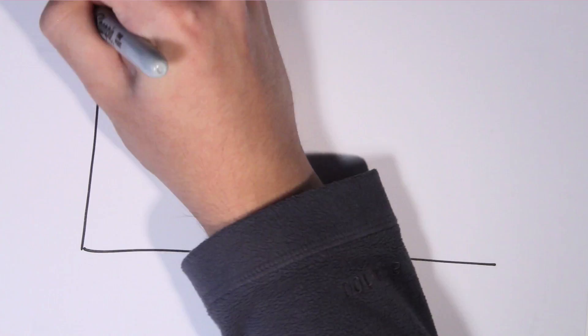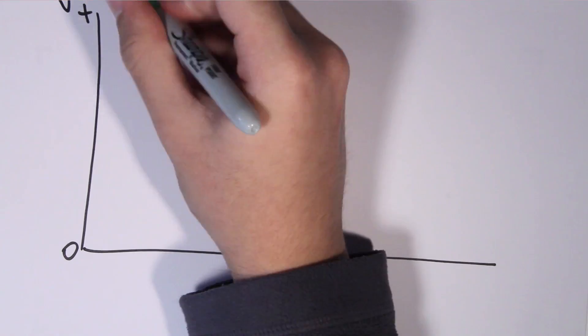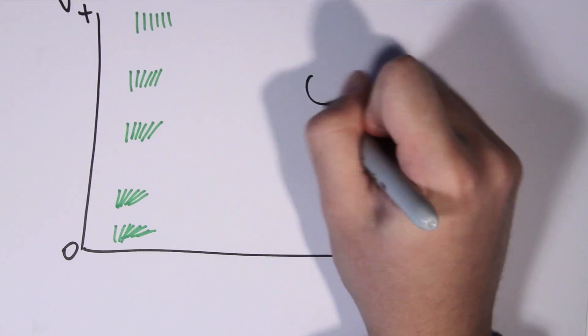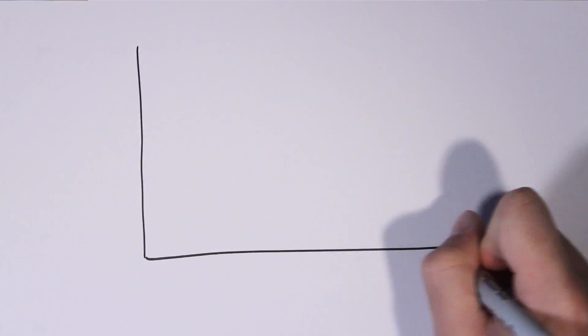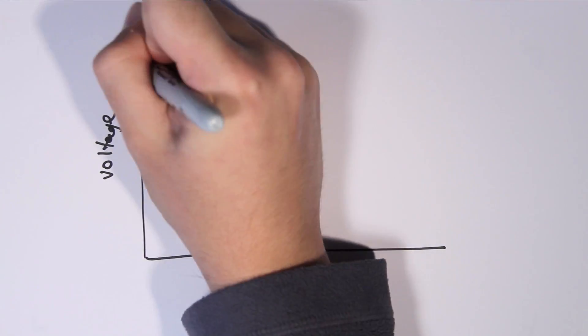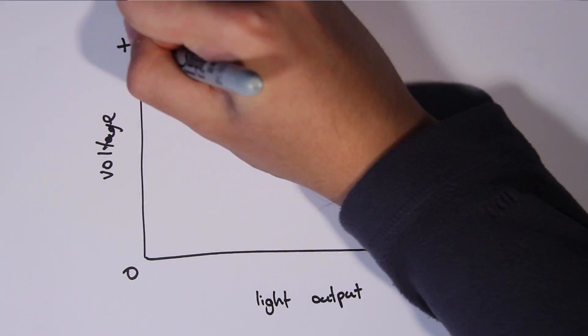The clever thing about liquid crystals is that the degree to which they are bent can be controlled by an electric field, with more voltage causing them to unbend. In this way, the intensity of light emitted by the LCD can be controlled by changing the voltage, from no light let through to maximum light let through.